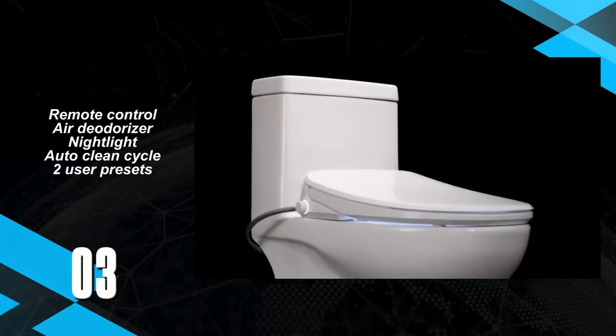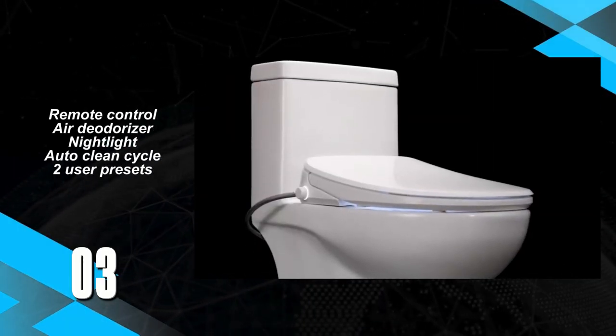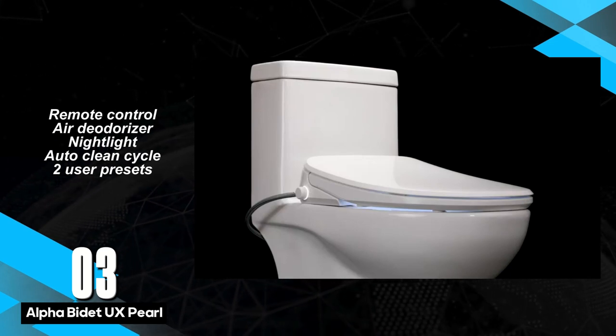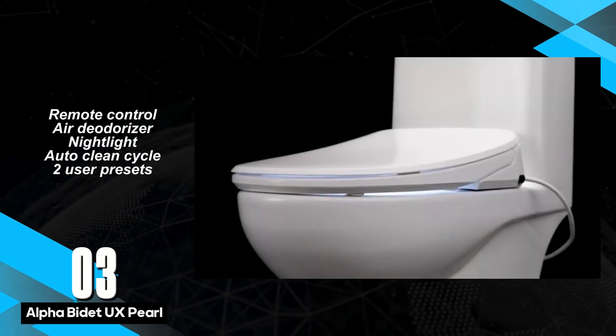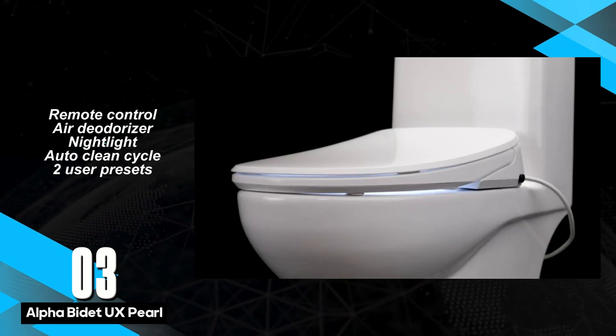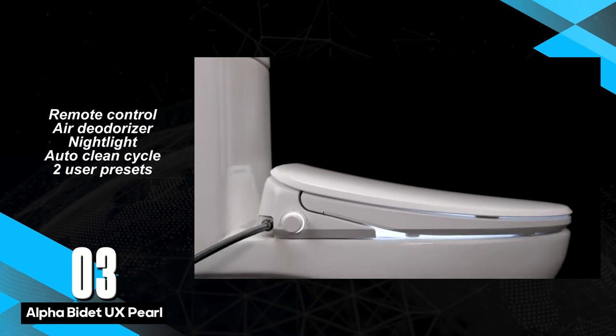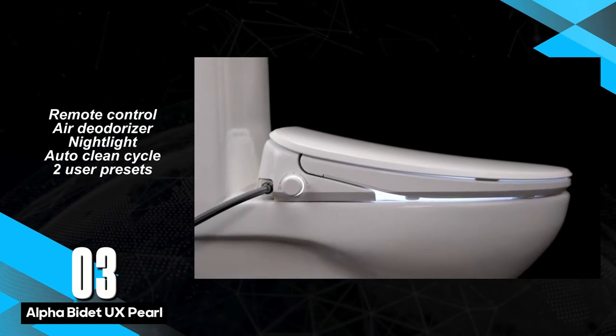The Alpha Bidet UX Pearl stands as a top-tier electronic bidet seat, offering a powerful and efficient wash alongside self-cleaning functionalities, heated seat, and air dryer. Despite its impressive features, it presents some drawbacks, including slightly confusing controls, a weaker drying function, and a higher price point compared to competitors.